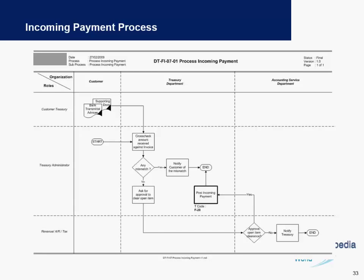The incoming payment process is a little more comprehensive. We will have different roles like customer treasury, treasury administrator, and the revenue, AR, or tax accountant. From the customer, we will receive bank transmit advices once they make the payment, or any other kind of supporting documents. The treasury department will check these documents, see if there are any mismatches, notify the customer about any mismatch, and if not, finally post the incoming payment manually in the system. The accounting service department will also check if there are any clearances which are pending or required in the near future.